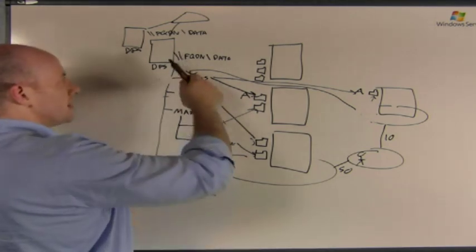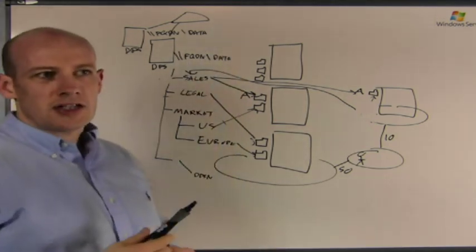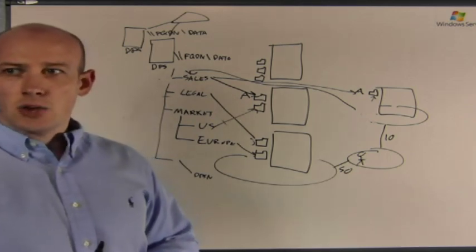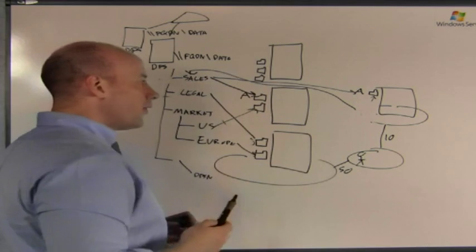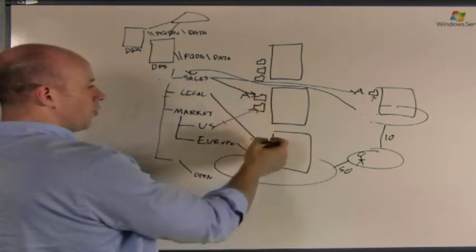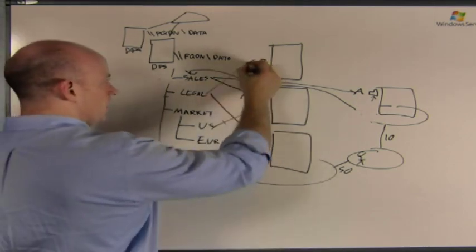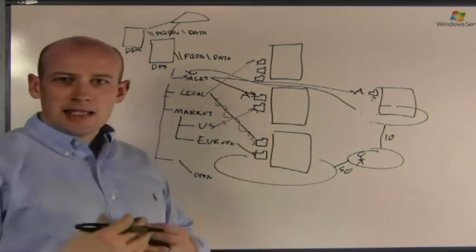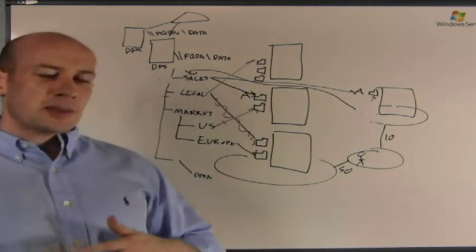Well if I've been using DFS the users just access slash sabotech dot net slash data slash share one. If I want to move that data to another server I copy over and I update the link to instead of pointing here I point it there instead. It's that simple.